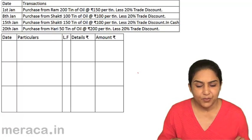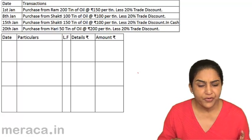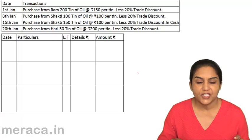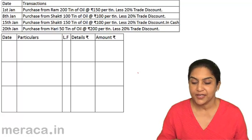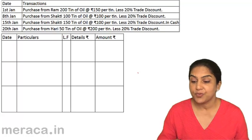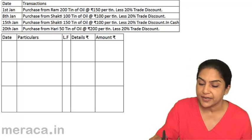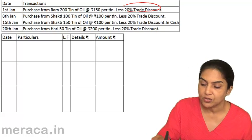A simple example: there are four transactions. On 1st January, purchased from Ram, 200 tins of oil at the rate of 150 per tin, less 20% trade discount.